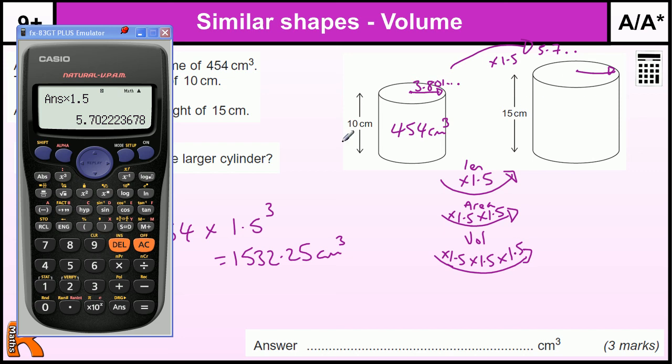And then we go through the process of squaring that, times in by pi, and then times in that by 15. And we get the same answer, 1532.25 cm³.